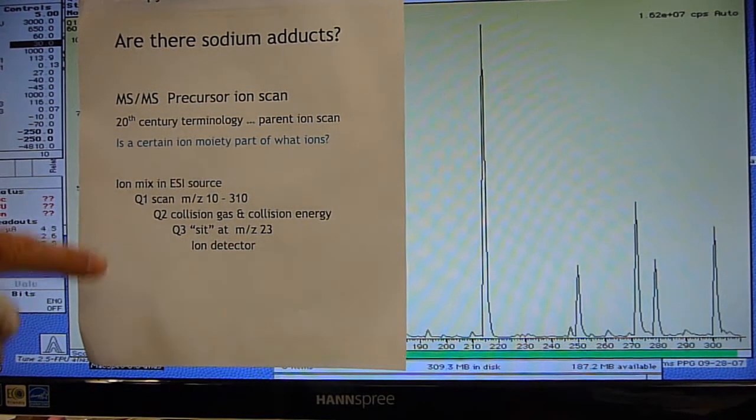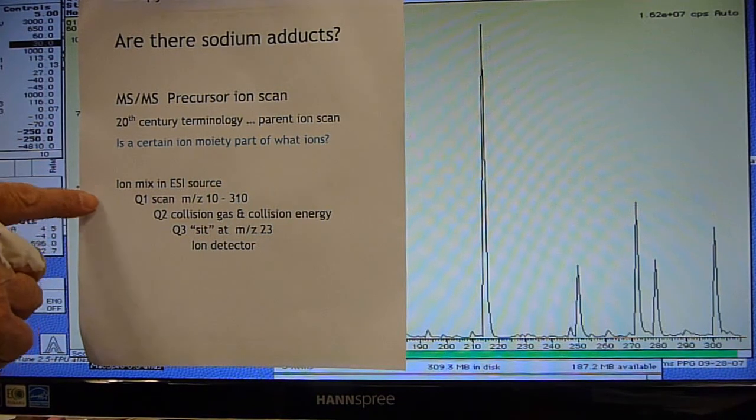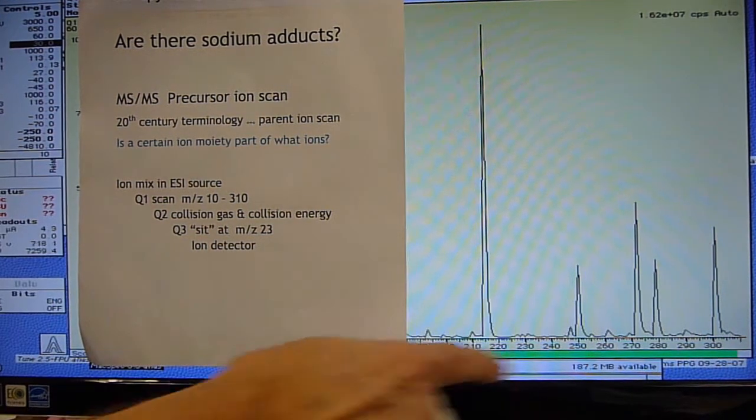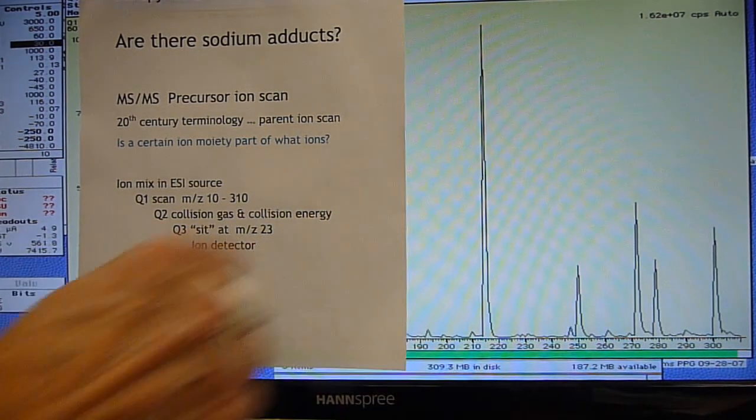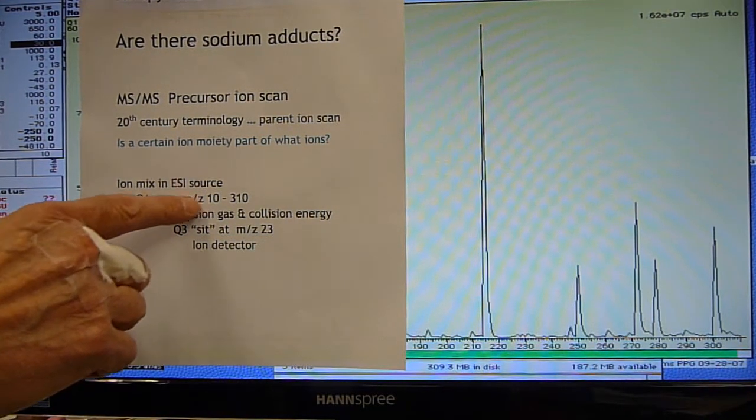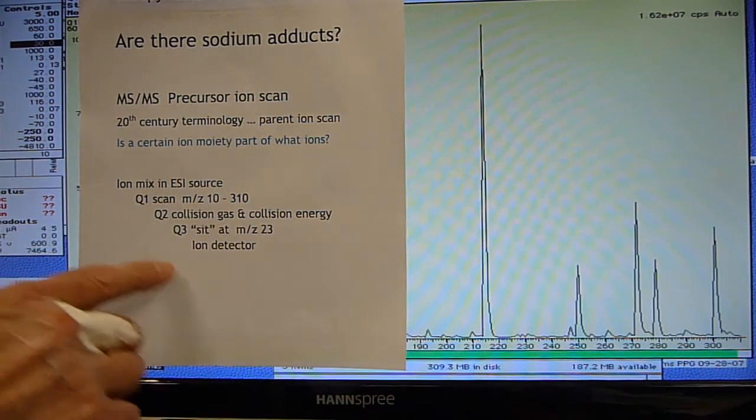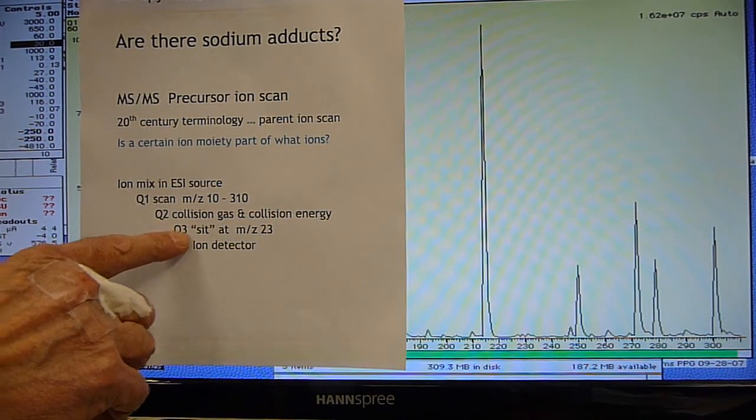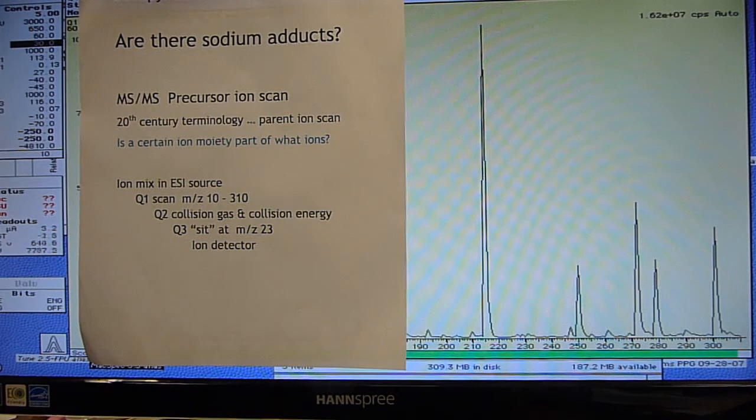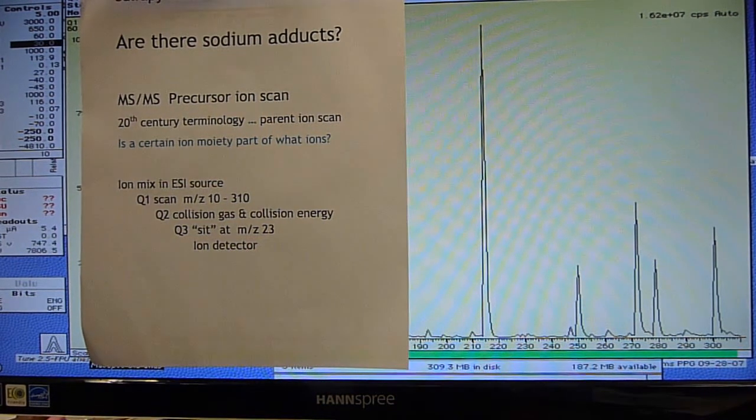In this situation what we're going to do is we're going to have an ion mix. This is in the electrospray source because this is just a Q1, this is just a MS scan. We're going to have Q1 scan from 10 to 310. Q2 is going to be filled with a collision gas and have a certain collision energy. And then Q3 is going to sit at 23. And we're going to see what ions are sodium adducts.